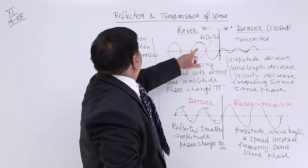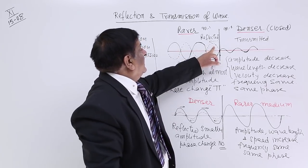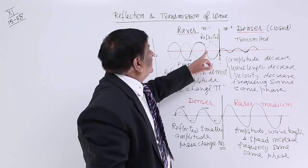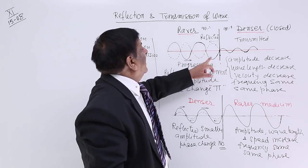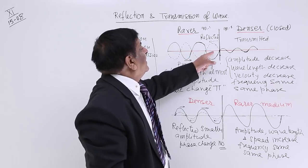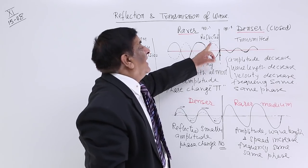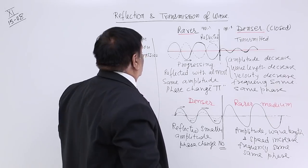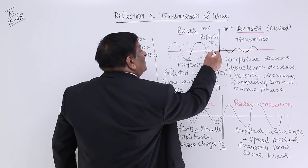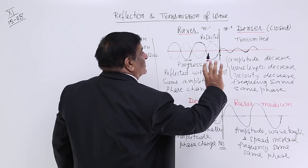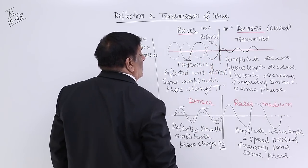What has happened in this reflected wave? In this reflected wave, the frequency is the same, because this interval — crest to crest — naturally the crest to crest formation will occur at the same interval. So they are reflected with almost the same amplitude — almost, not necessarily the absolute same.